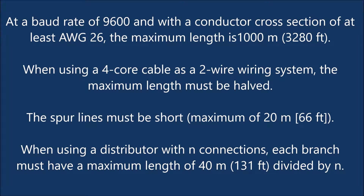At a baud rate of 9,600 and with a conductor cross-section of at least AWG-26, the maximum length is 1,000 meters (3,280 feet). When using a four-core cable as a two-wire wiring system, the maximum length must be halved.